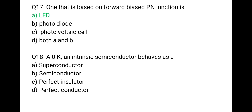The next question is: at zero Kelvin, an intrinsic semiconductor behaves as — and the correct option is a perfect insulator. An intrinsic semiconductor behaves as a perfect insulator at zero Kelvin and as a perfect conductor at high temperature. So option C is correct.